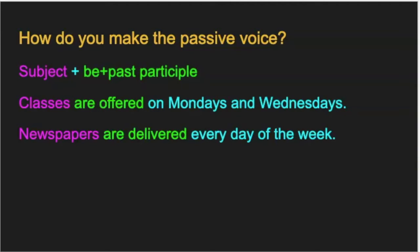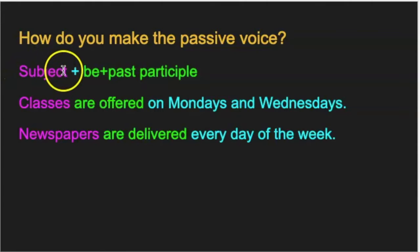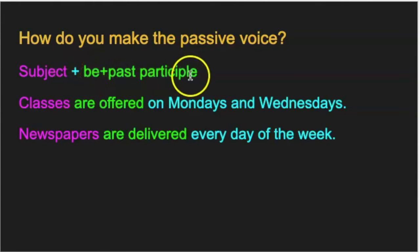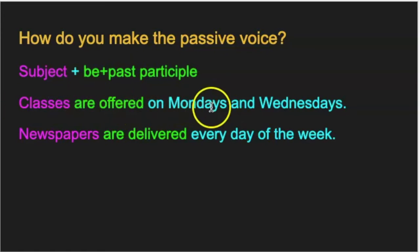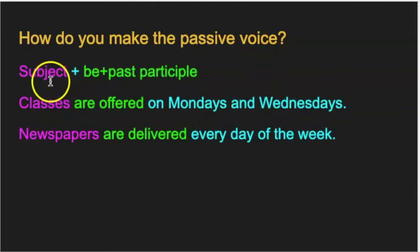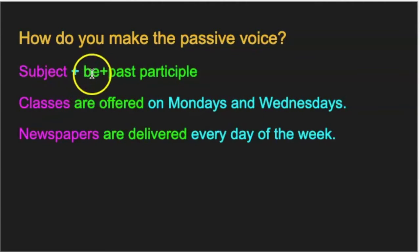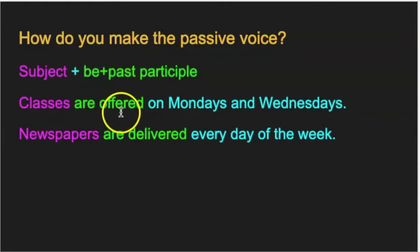So how do you make the passive voice? Remember, it's subject plus the verb to be plus past participle. For example: 'Classes are offered on Mondays and Wednesdays.' Classes is the subject, the verb to be is 'are,' and the past participle is 'offered.'